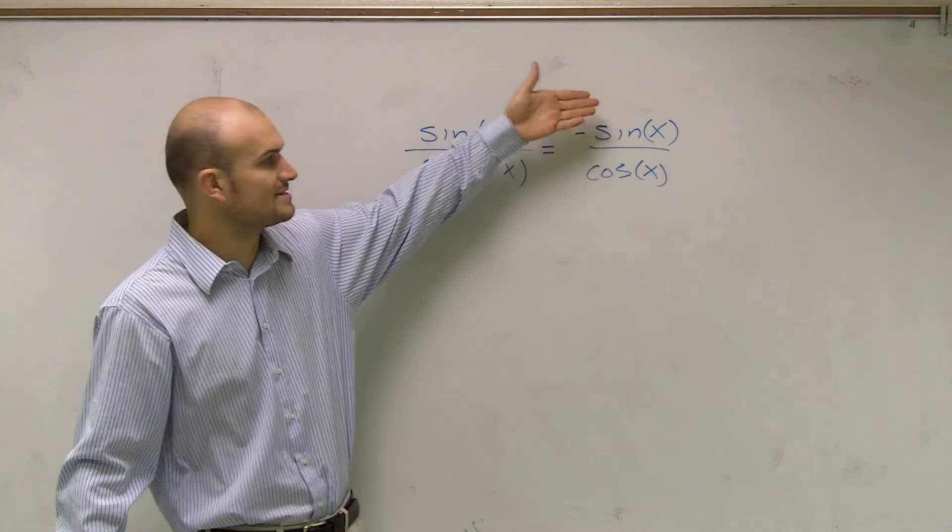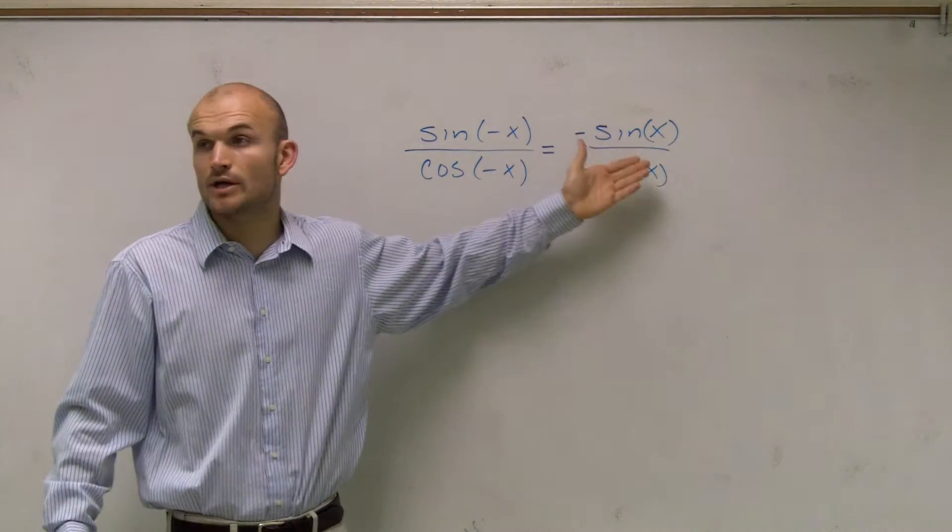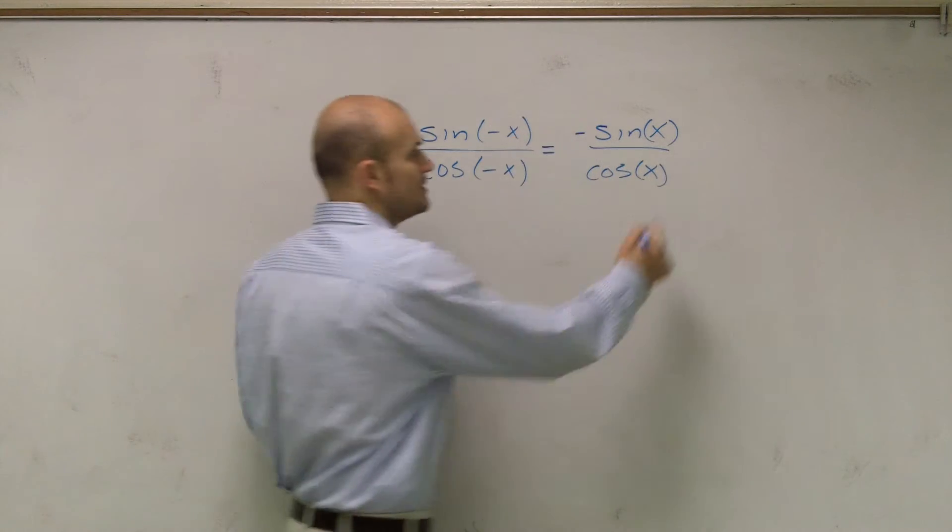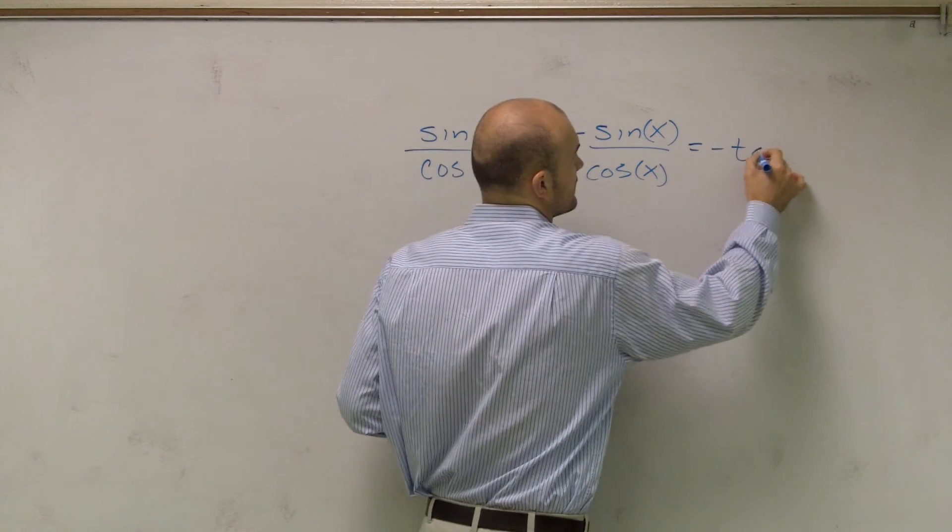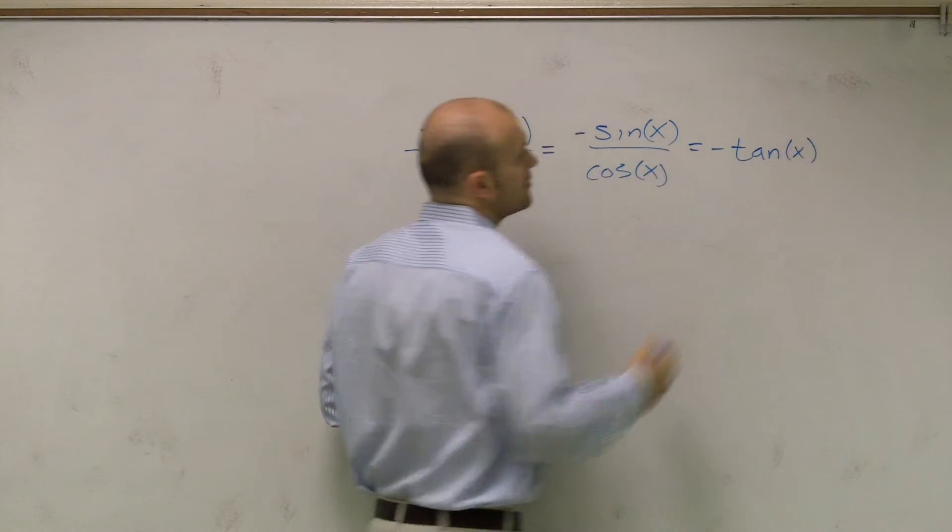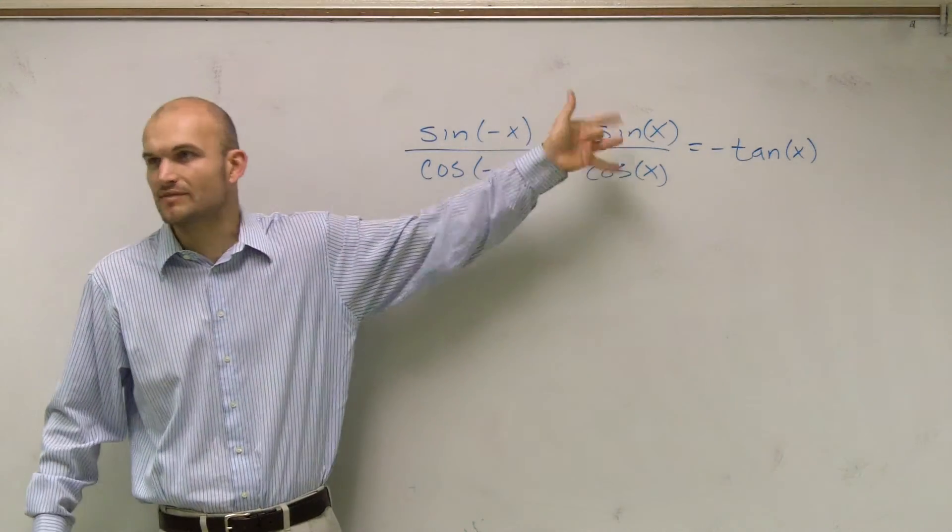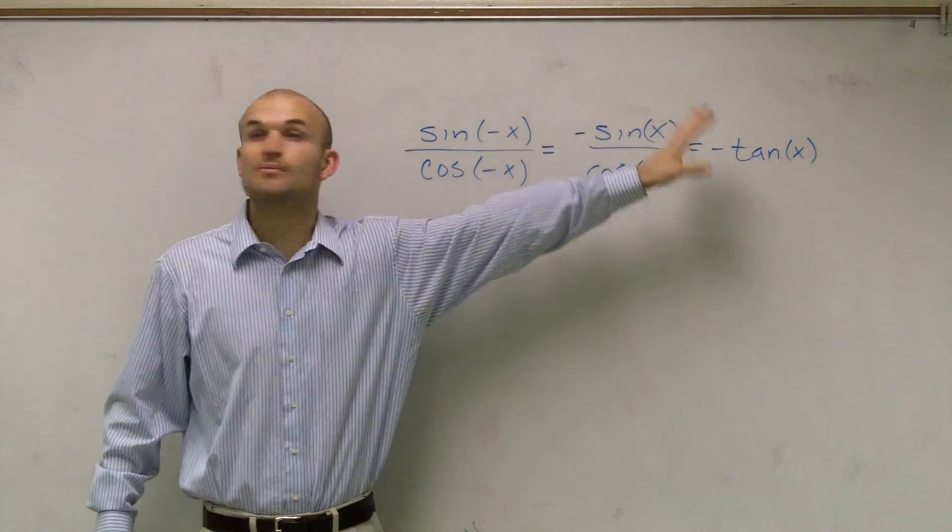So now, all I have is a sine over cosine, which we know can reduce down to the tangent function. And one of them is negative, so it's going to equal negative tangent of x. Remember, we're working on simplifying, so instead of leaving it as sine over cosine, we can simplify it down to tangent.